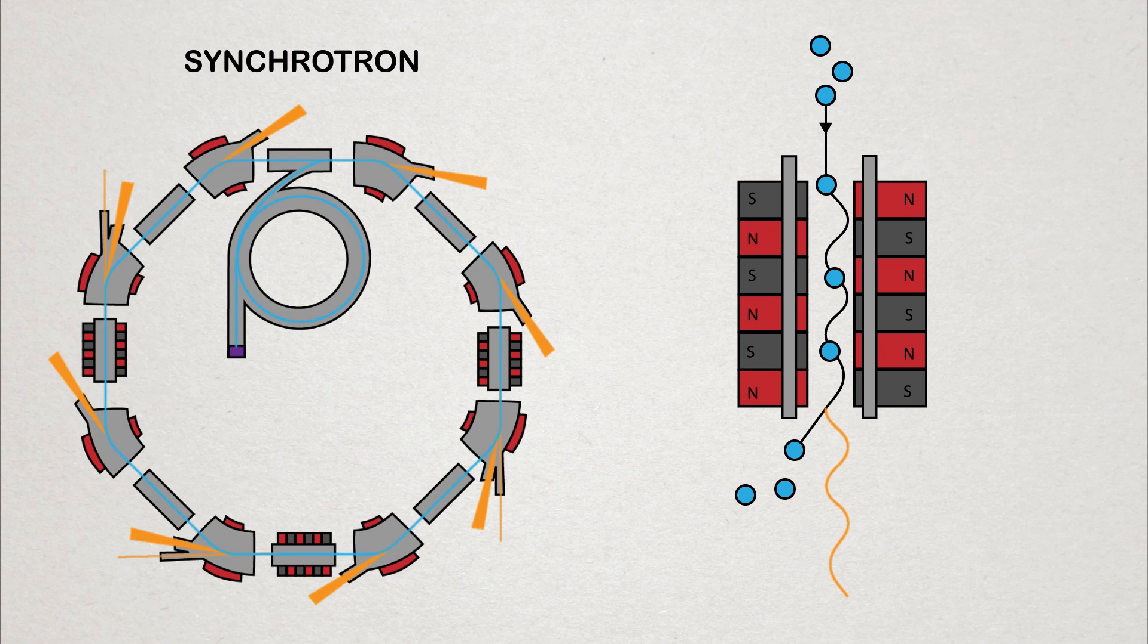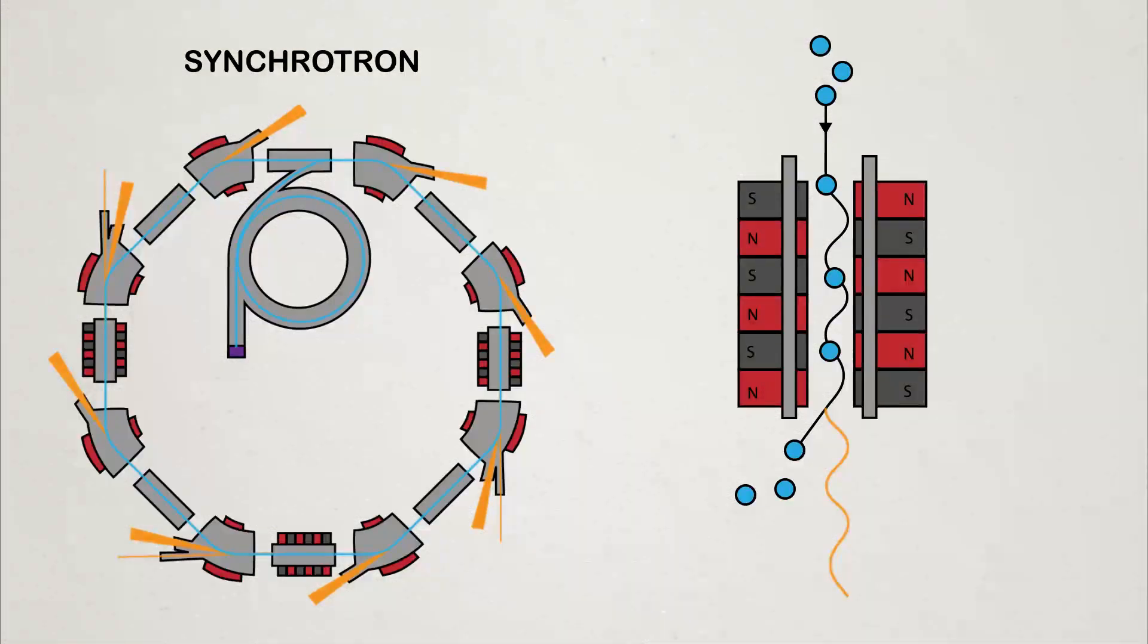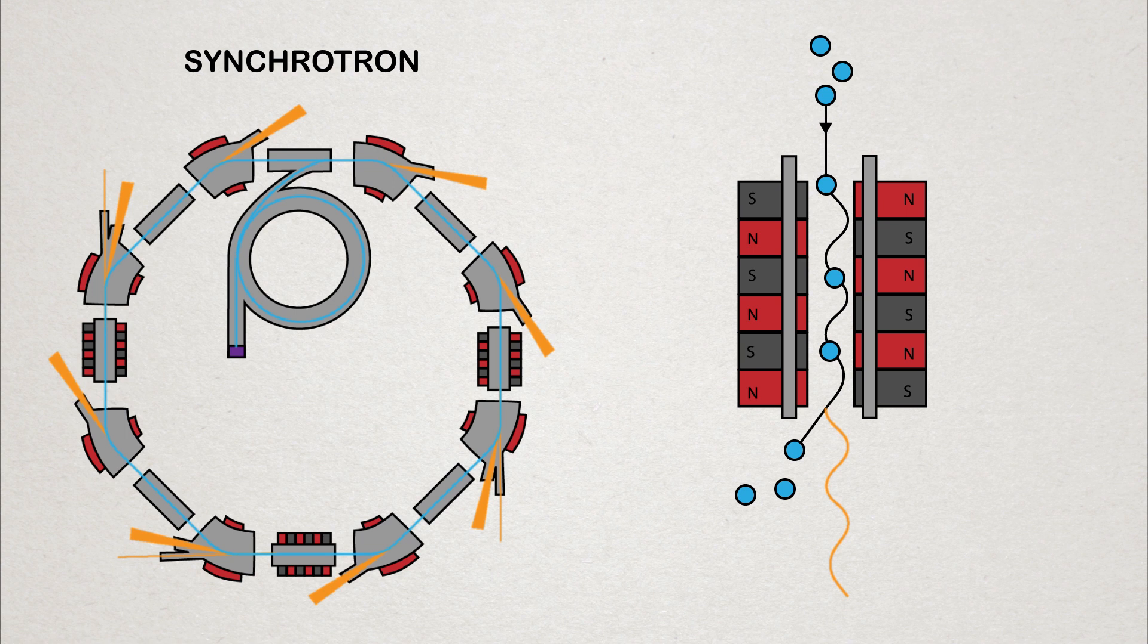The light produced by the bending and undulating magnets is then sent down what is called beam lines that can be used for experiments. It is this light that scientists use to measure the shortest time.